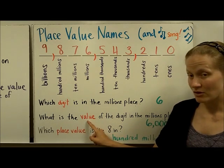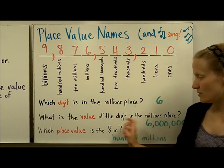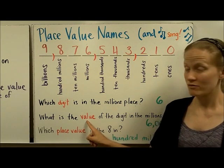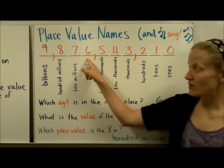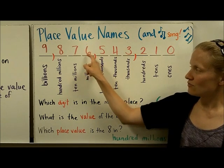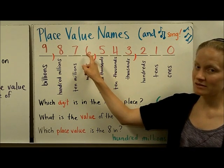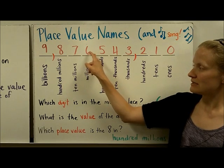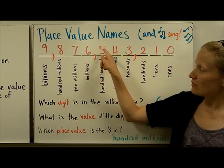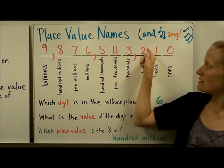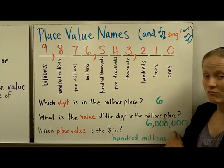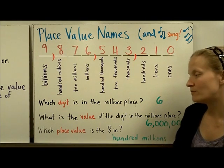And so we find the millions place and then we name the digit that is there, which is 6. If we're asked the value of the digit in the millions place, this word 'value' is asking how much it's worth. So you need to figure out what's in the millions place but then tell how much that number is worth. So this 6 is not worth 6—the value of this 6 is 6 million. You could write it by writing a 6 and then placing a 0 in every place after it to the right. This is in standard form.